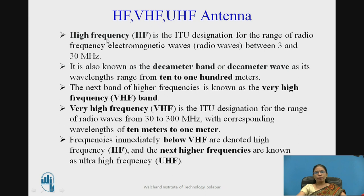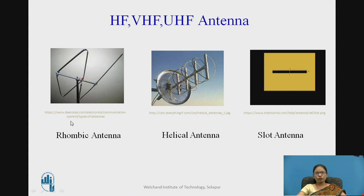HF — high frequency as designated by ITU — covers 3 to 30 megahertz with wavelengths of 10 to 100 meters. VHF — very high frequency — ranges from 30 to 300 megahertz with wavelengths of 10 to 1 meter. VHF lies between HF and UHF. Antenna diagrams shown here include the rhombic antenna — which is rhombus-shaped — the helical antenna, and the slot antenna which features a slot element.